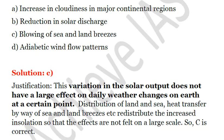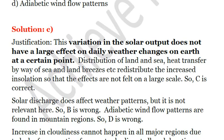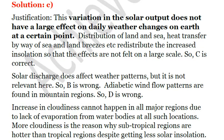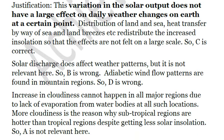The explanation: variation in solar output does not have a large effect on daily weather changes on Earth. Because of the distribution of land and sea, heat transfer by way of sea and land breezes redistributes the increased insolation so that the effects are not felt on a large scale. So C is correct.